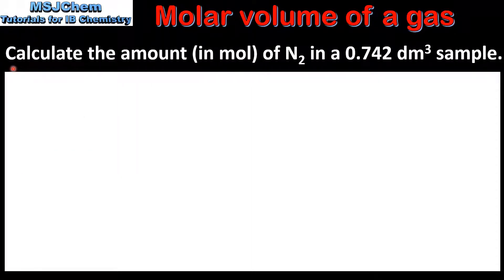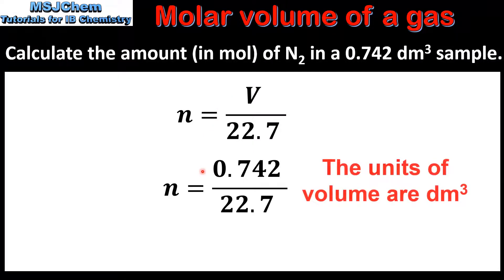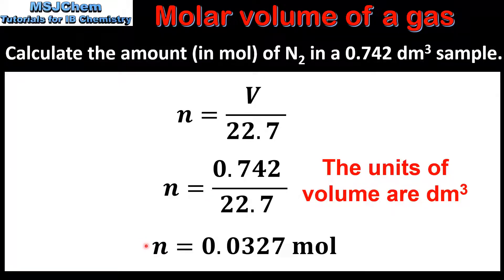In the next example we'll calculate the amount in moles of nitrogen in a 0.742 decimetre cubed sample. We'll use the equation N equals V divided by 22.7. The volume of nitrogen is 0.742 decimetres cubed, which we divide by the molar volume of a gas at STP. This gives us an amount of nitrogen of 0.0327 moles.